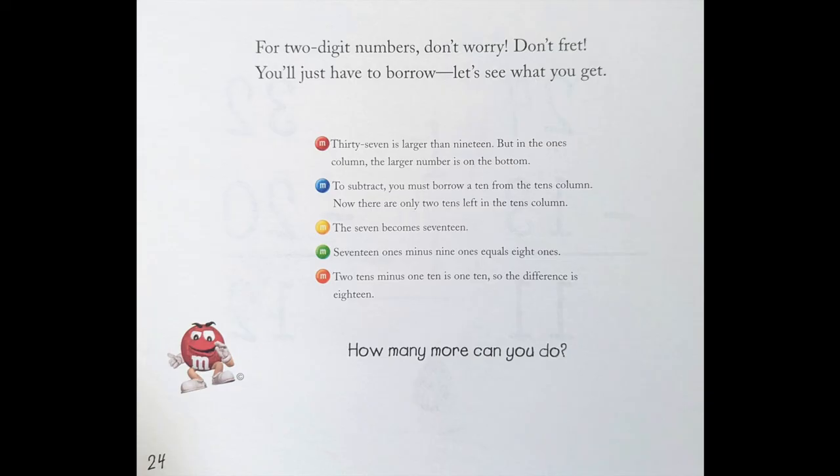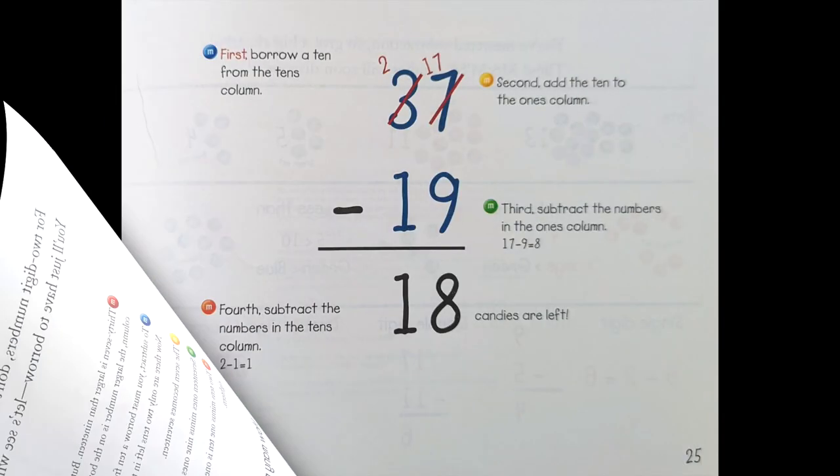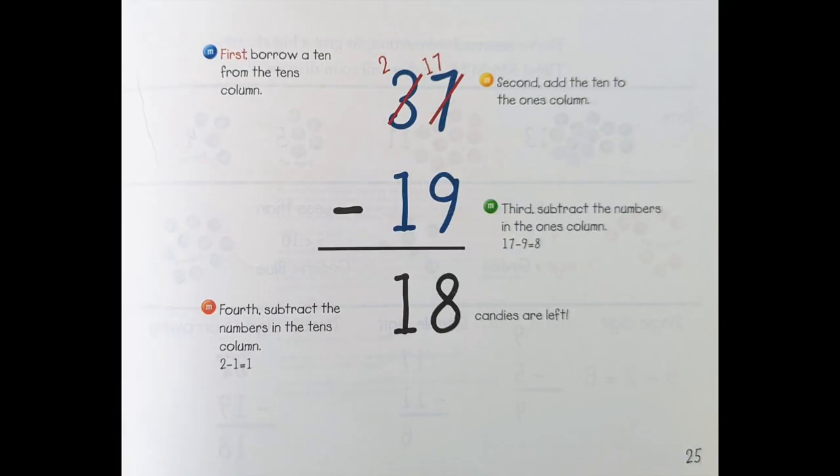How many more can you do? Let's look at that problem. First, borrow a 10 from the 10's column. Second, add the 10 to the 1's column. Third, subtract the numbers in the 1's column: 17 - 9 = 8. Fourth, subtract the numbers in the 10's column: 2 - 1 = 1. 37 - 19 = 18. 18 candies are left.